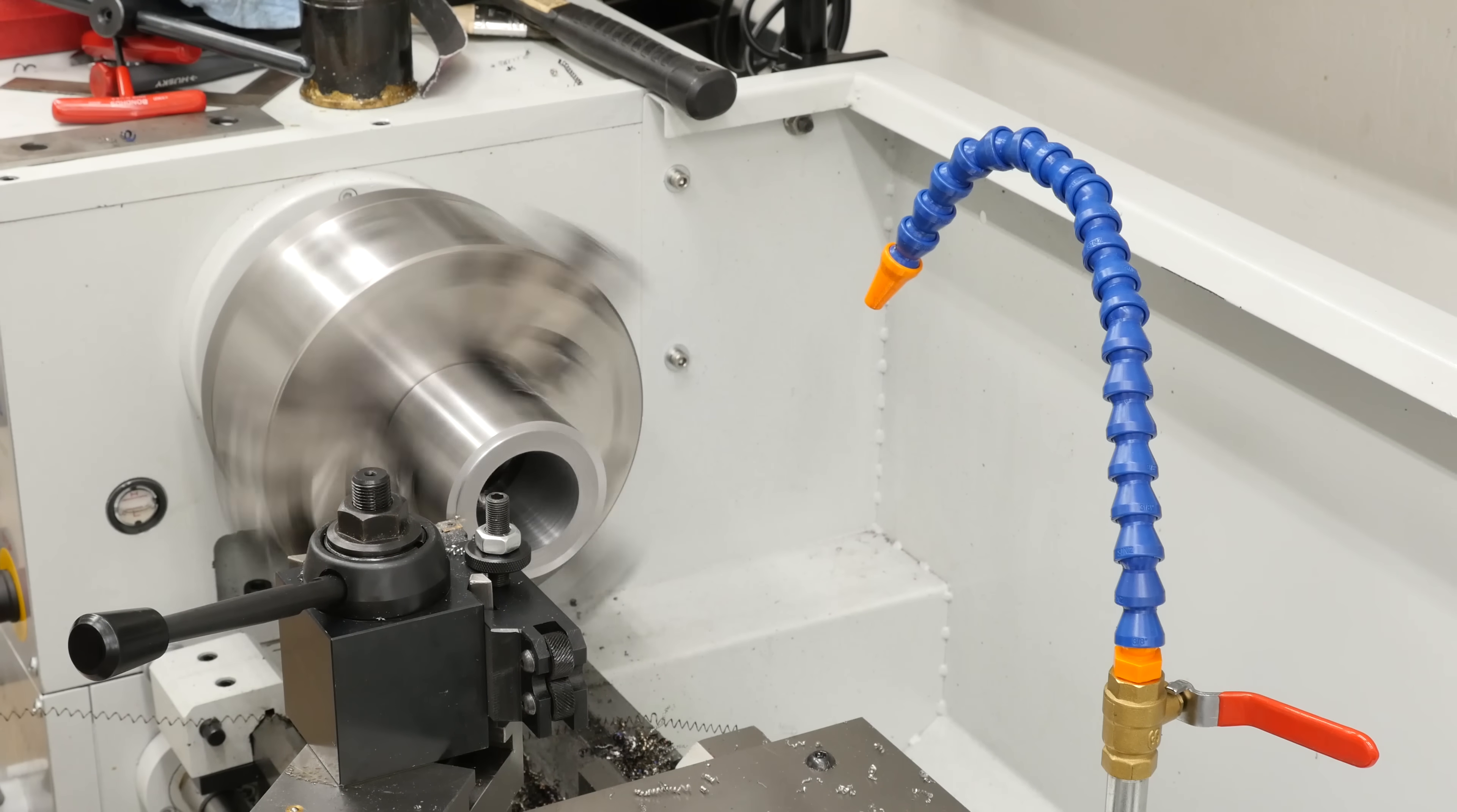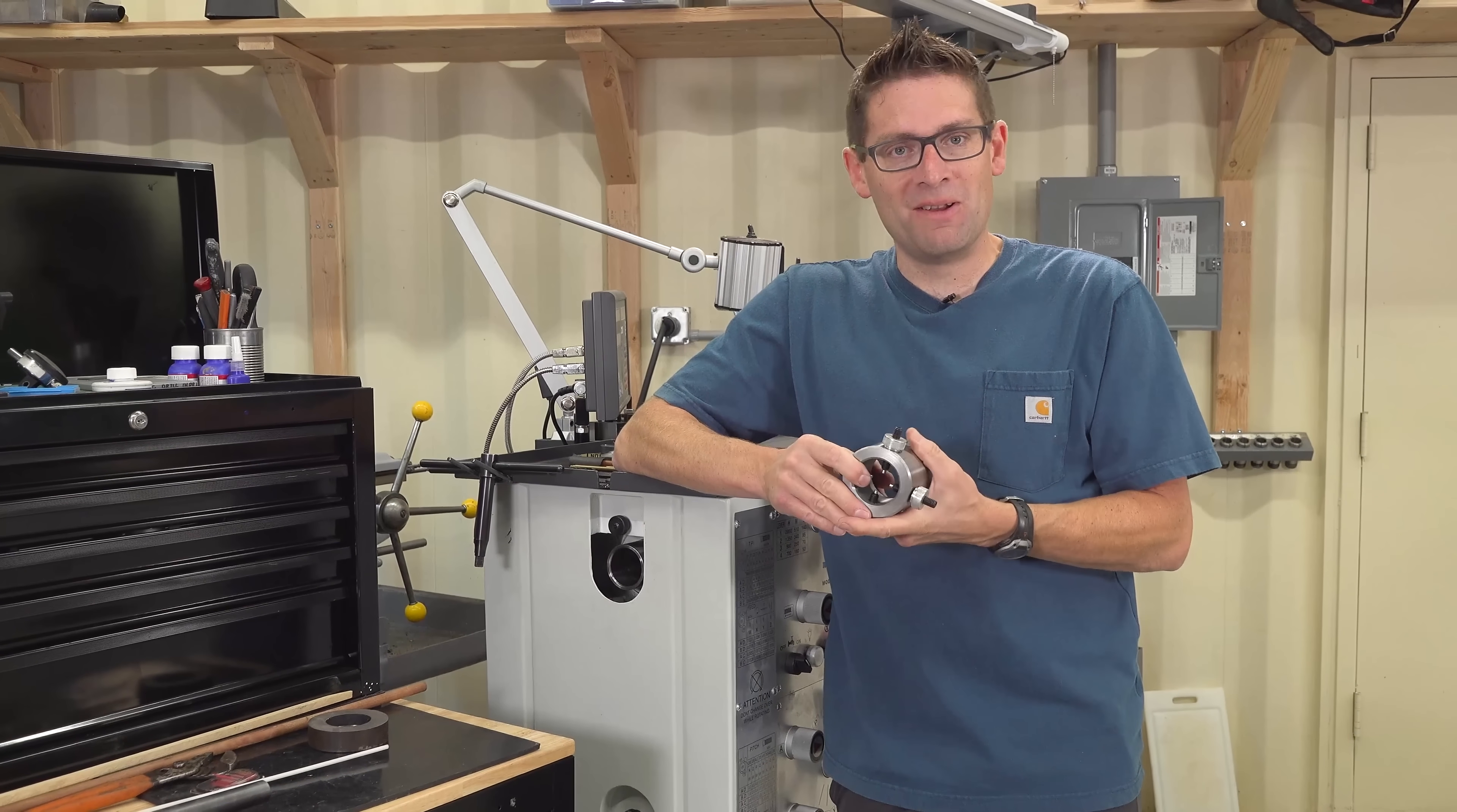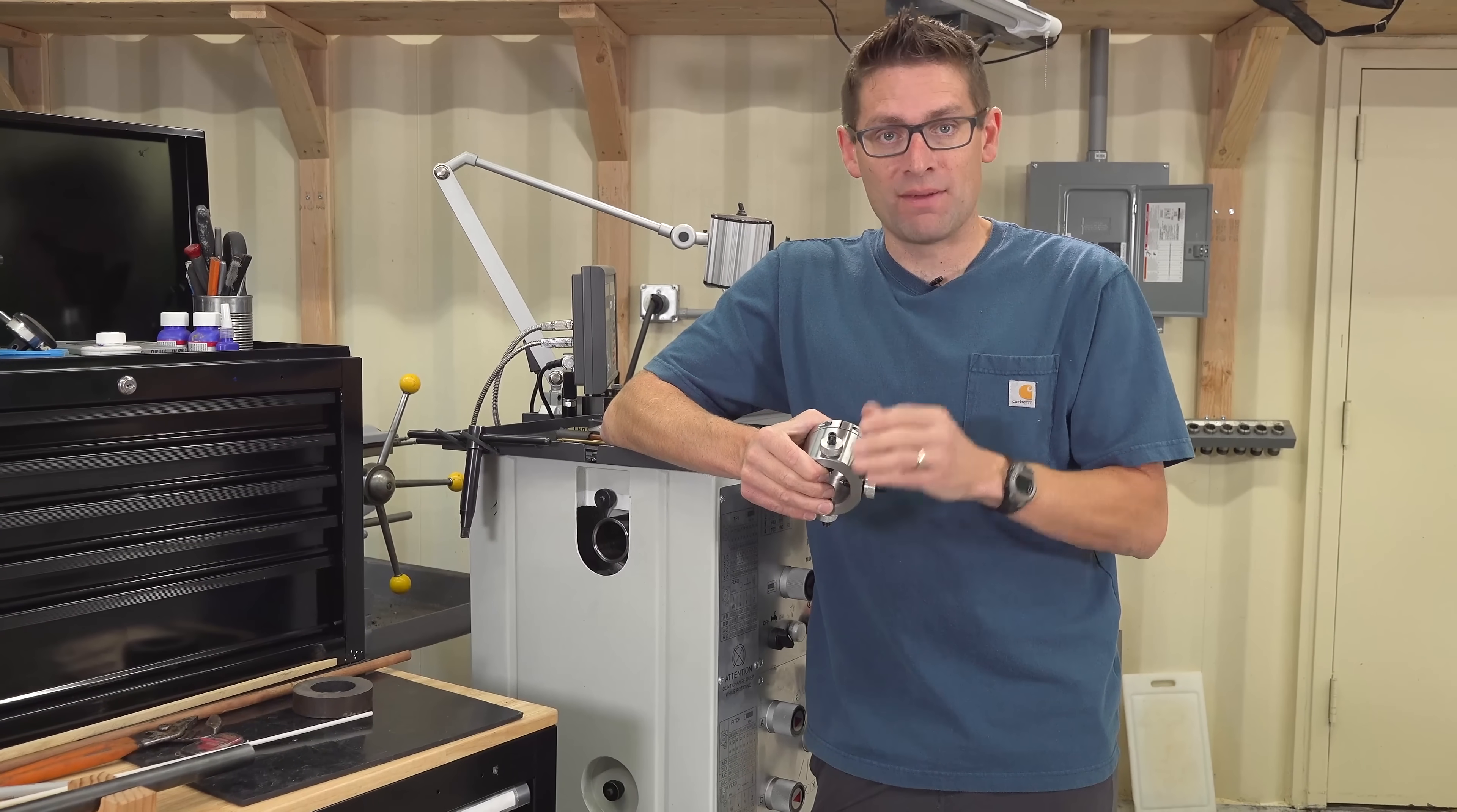Then it was time to mill the flats where these thumb screws contact the body of the spider. And so with some careful use of parallels and 90 degree squares, I milled off each of the flats.